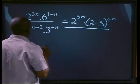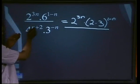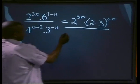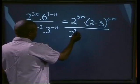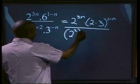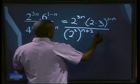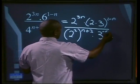Divided by 4 to the power of n plus 2. Now 4 is not a prime number, so 4 can be written as 2 to the power of 2, all to the power of n plus 2, multiplied by 3 to the power of minus n.